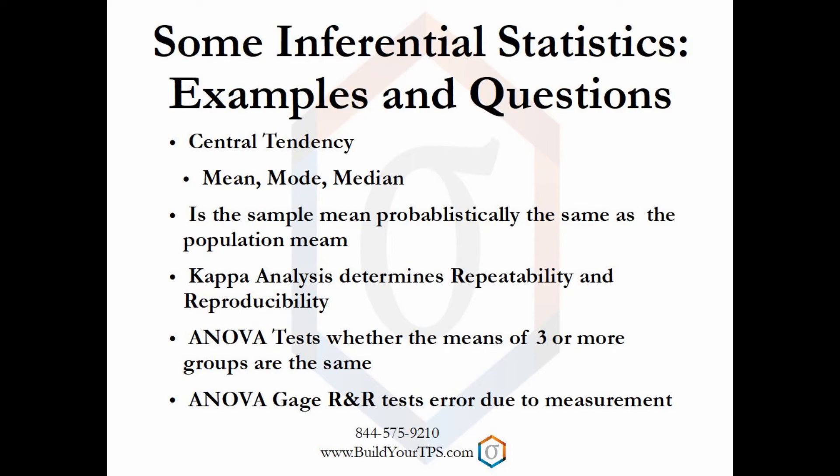ANOVA Gauge R&R is used to test variants in the measurement system. A measurement system example could simply be reading a thermometer. If one person reads a thermometer at eye level, one looks down a little bit, and one looks up a little bit at it, there could be error in your measurement system. This is a very short representation of some of the many statistical tests that are available to anybody using statistics.